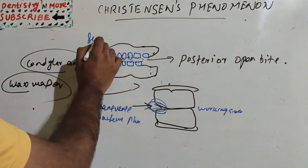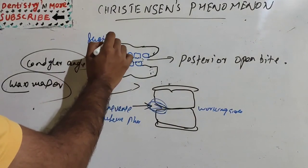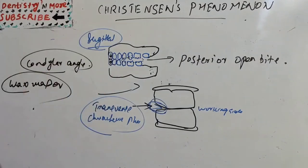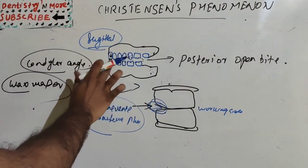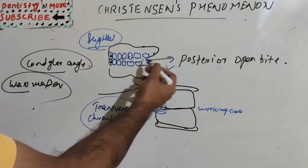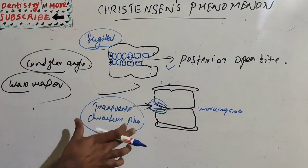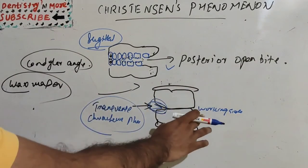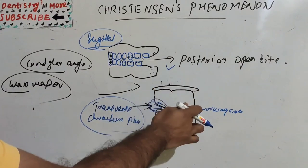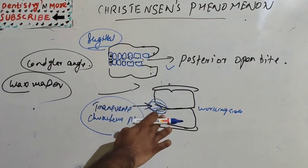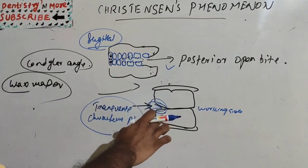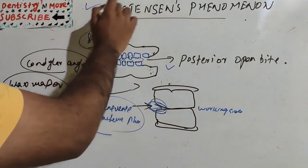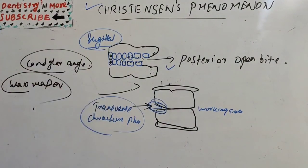In summary: the sagittal phenomenon occurs when anterior teeth are in contact and a V-shaped space forms at the posterior molar region — a posterior open bite. The transverse phenomenon occurs during lateral movements where occlusal rims contact perfectly on the working side but create a V-shaped space on the non-working or balancing side. Both forms of Christensen's Phenomenon are corrected using compensatory curves.